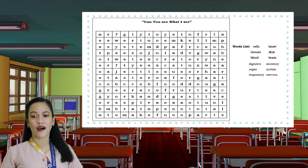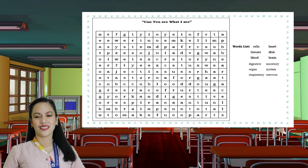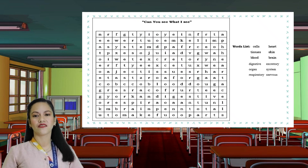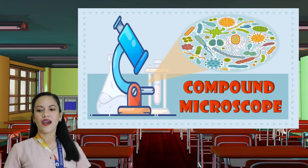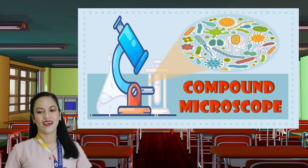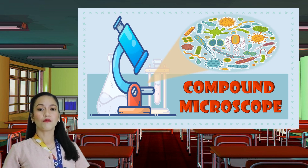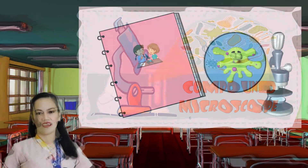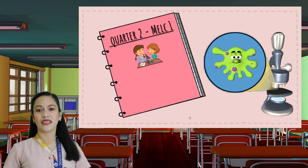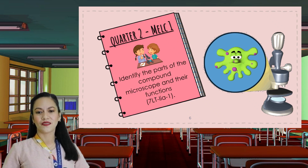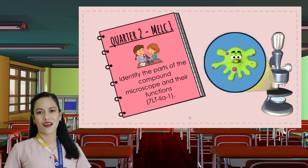Good job, students, if you found those words quickly. Those keywords are related to the parts of the human body and its organization — specifically the word 'cell,' which can be observed and studied under a microscope. Microscope helps us to see tiny things more than what a normal eye can do. For today's lesson, our topic is anchored to the most essential learning competency given by the Department of Education, which is to identify the parts of the compound microscope and their functions.